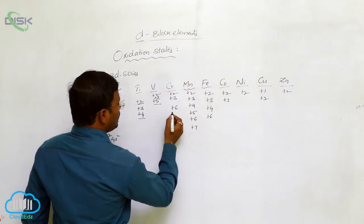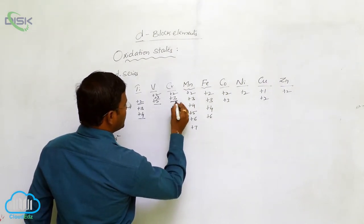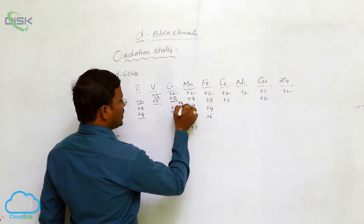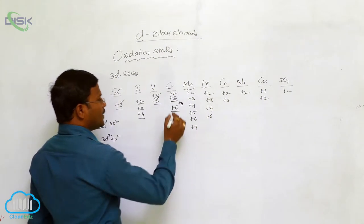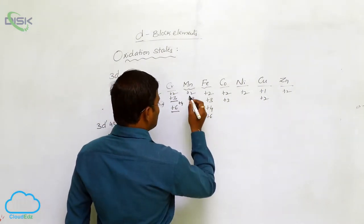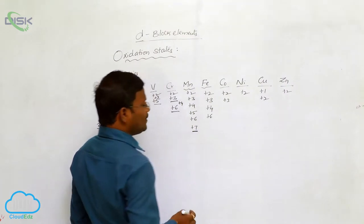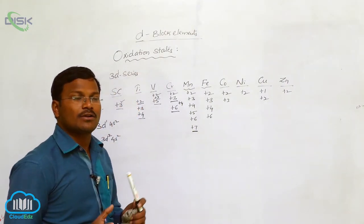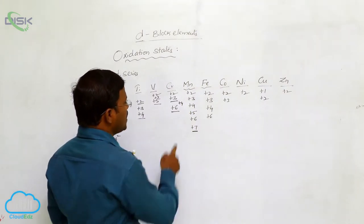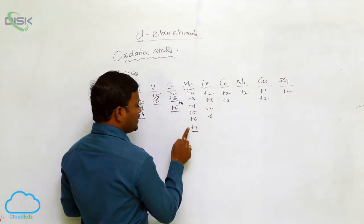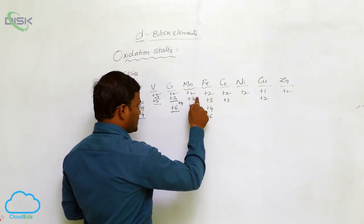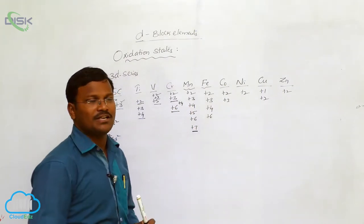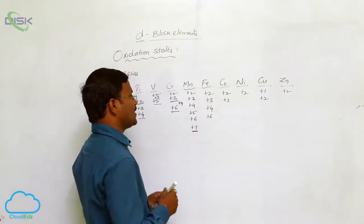Similarly, vanadium exhibits +5. For chromium, the generally identified oxidation states are +3 and +6, with a possibility of +4 and +5 as well. Manganese is a special category — the only element in the D-block which can exhibit such a wide variation of oxidation states, starting from +2 and ending with +7: +2, +3, +4, +5, +6, and +7. All such positive oxidation states are exhibited by manganese.